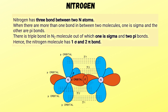The next example is the nitrogen molecule. Nitrogen has three bonds between its two nitrogen atoms. When there is more than one bond between two atoms, one is a sigma bond and the rest are pi bonds. The triple bond in nitrogen consists of one sigma bond and two pi bonds.